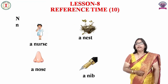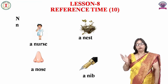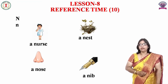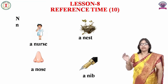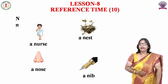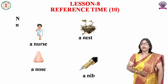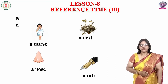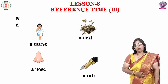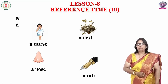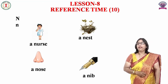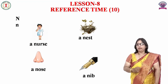Next हमारा letter है N। यहाँ पर capital और small दोनों N लिखा हुआ है — small n में थोड़ा सा difference है। इनसे बनने वाले शब्द देखते हैं: nurse — N, U, R, S, E, a nurse। Next है nest — N, E, S, T, a nest। उसके बाद nose — N, O, S, E, a nose। और pen से लिखते हैं, pen के आगे जो लगा होता है उसे nib बोलते हैं — N, I, B, a nib।